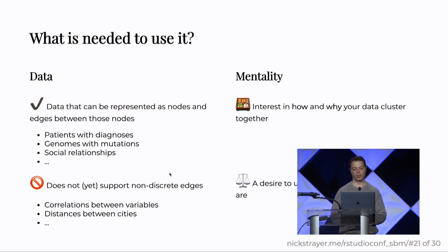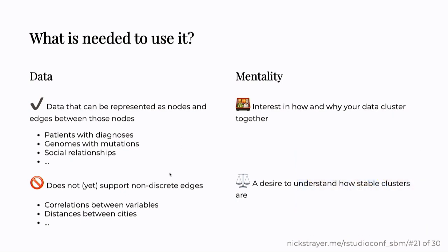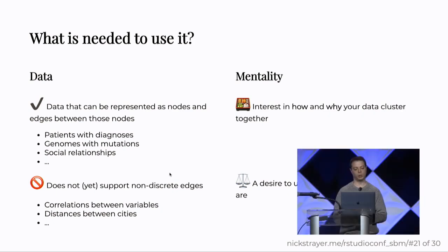And you also need a mentality. There's a lot of different ways to do clustering and unsupervised learning. To use this method, you're going to want to have an interest in how and why your data cluster together. This is the nice thing about stochastic block models, they're very transparent in why you are clustering. Any given cluster is entirely characterized by its vector of propensity to be connected to another cluster. So if you have five clusters, every cluster is characterized entirely by a length five vector that says how likely any given node in one of the clusters is to be connected to the other clusters. And you need a desire to understand how stable your clusters are. If you just wanted to fit a stochastic block model and you didn't care about using R, you could use graph tool. But what we focus on especially is looking at the stability of these clusters.